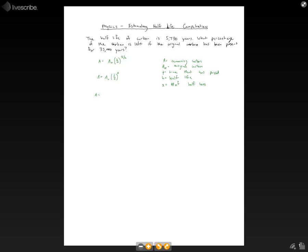If we write out what we have: a equals a₀ multiplied by one-half to the 35,000 over 5,730. We don't know the initial amount or ending amount, but we just want to find the percentage that's left. The ratio a over a₀ gives us the percentage remaining.